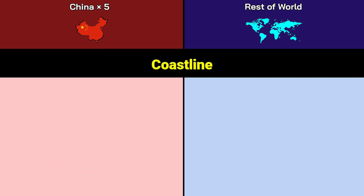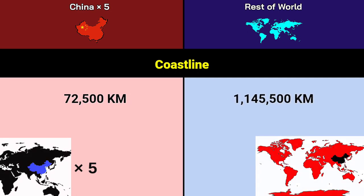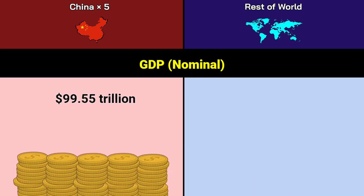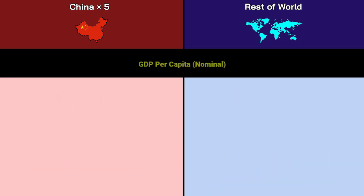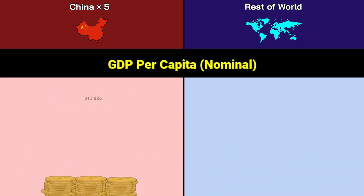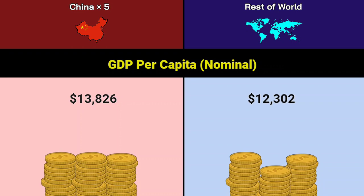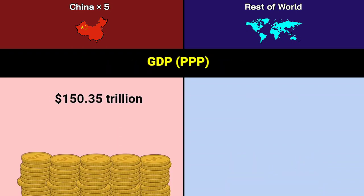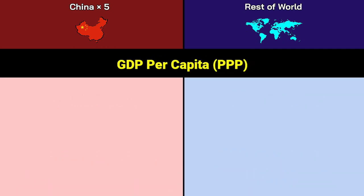Coastline: China 72,500 kilometers, Rest of World 1.14 million square kilometers. GDP nominal: China 99.55 trillion dollars, Rest of World 80.09 trillion dollars. GDP per capita: China 13,826 dollars, Rest of World 12,302 dollars. GDP for PPP: China 150.35 trillion dollars, Rest of World nearly 110 trillion dollars. GDP per capita for PPP: China 20,881 dollars, Rest of World 16,886 dollars.